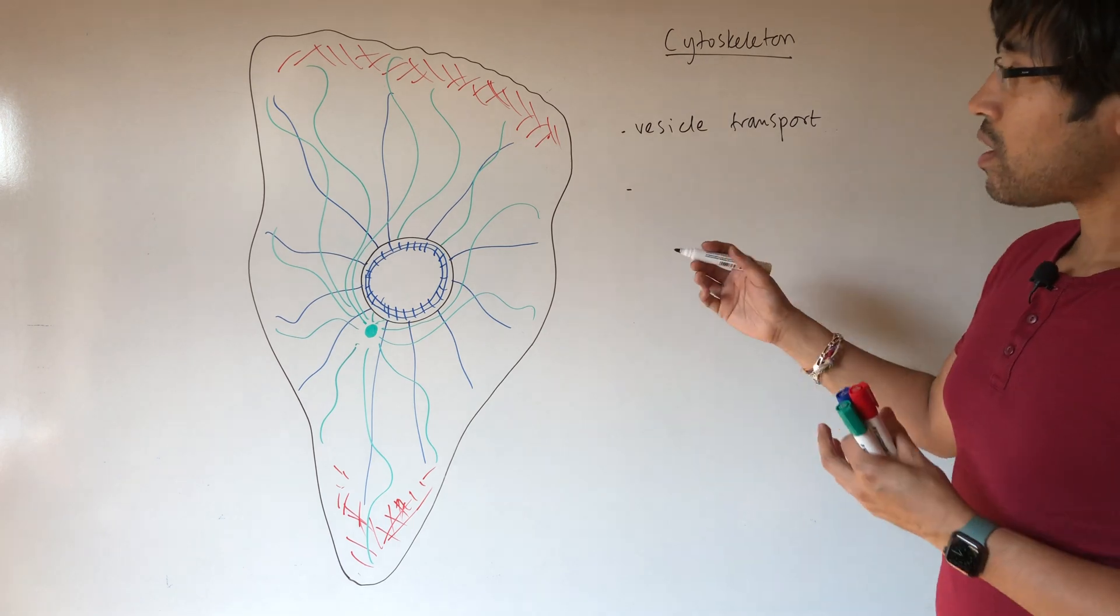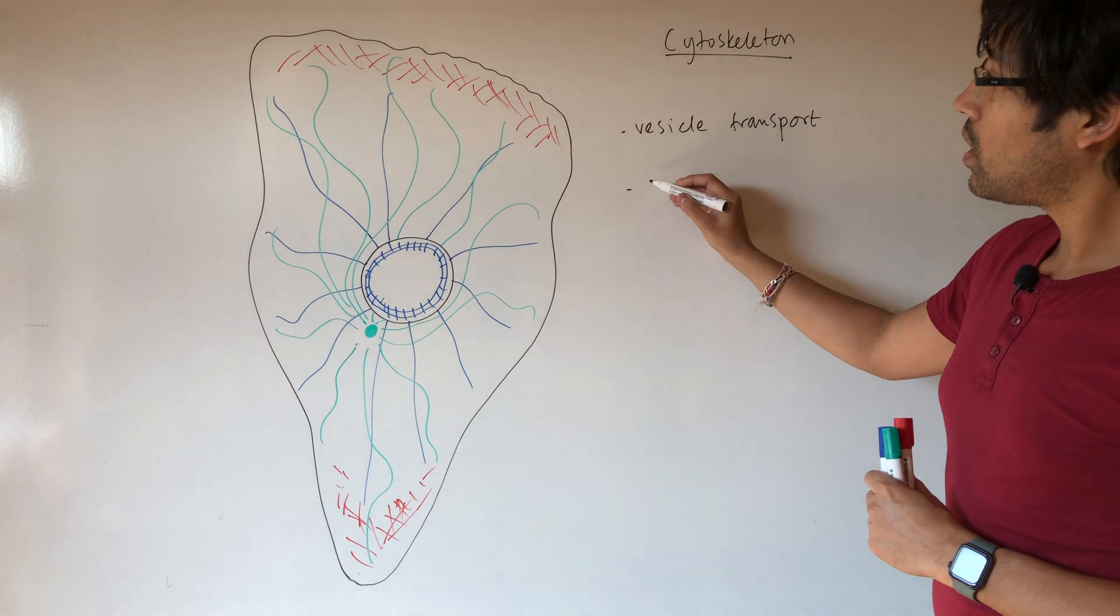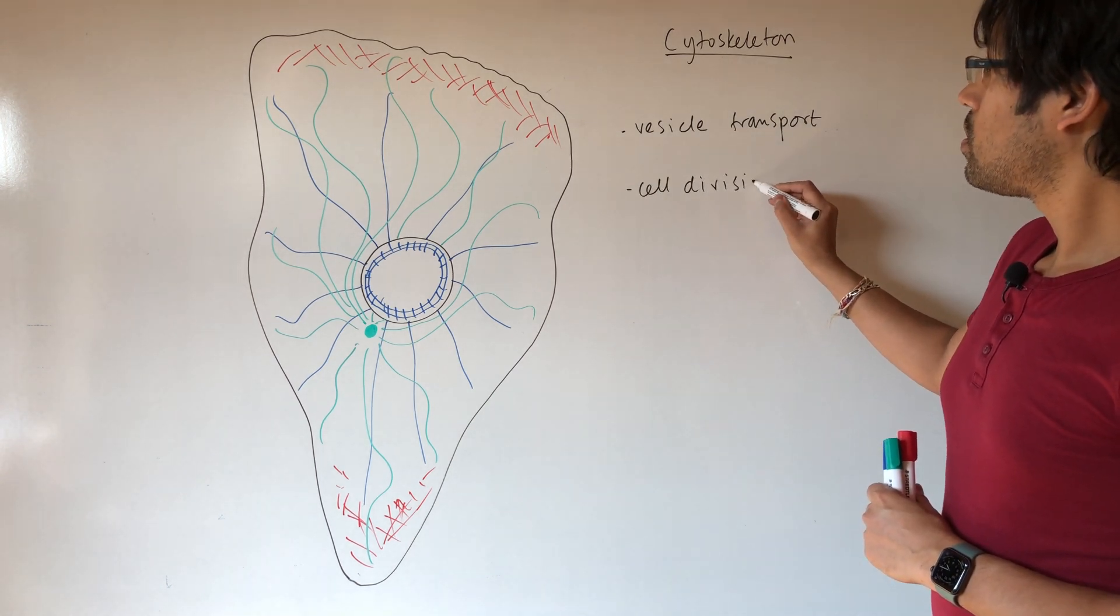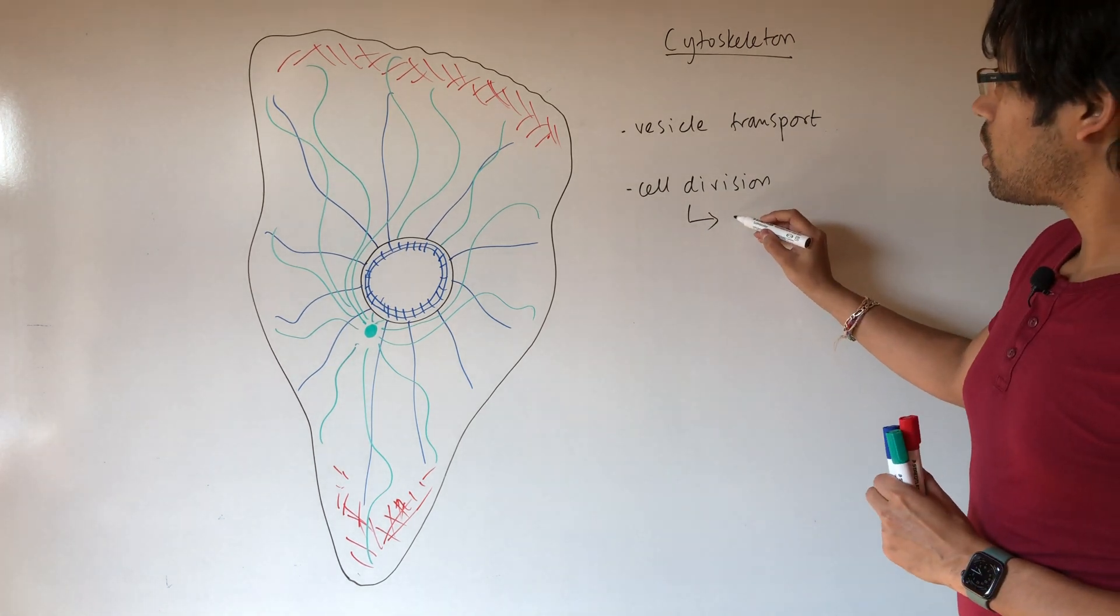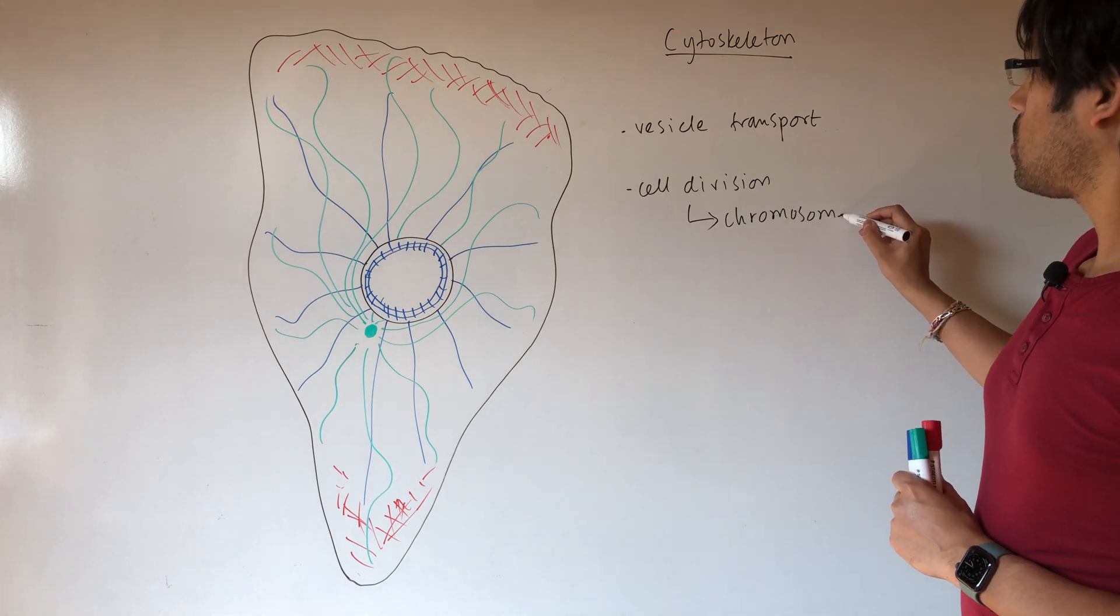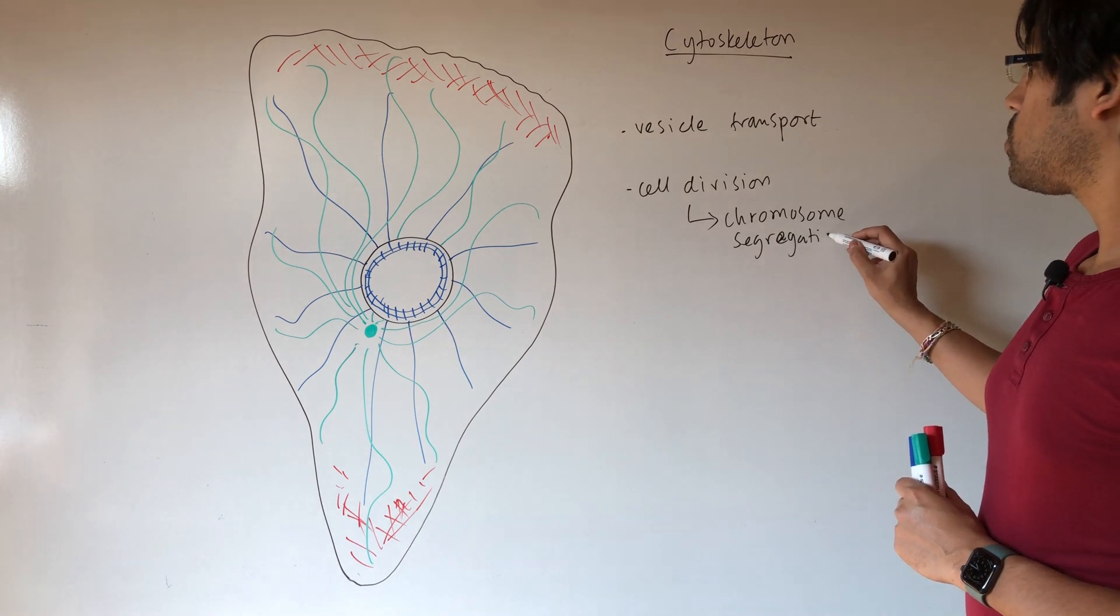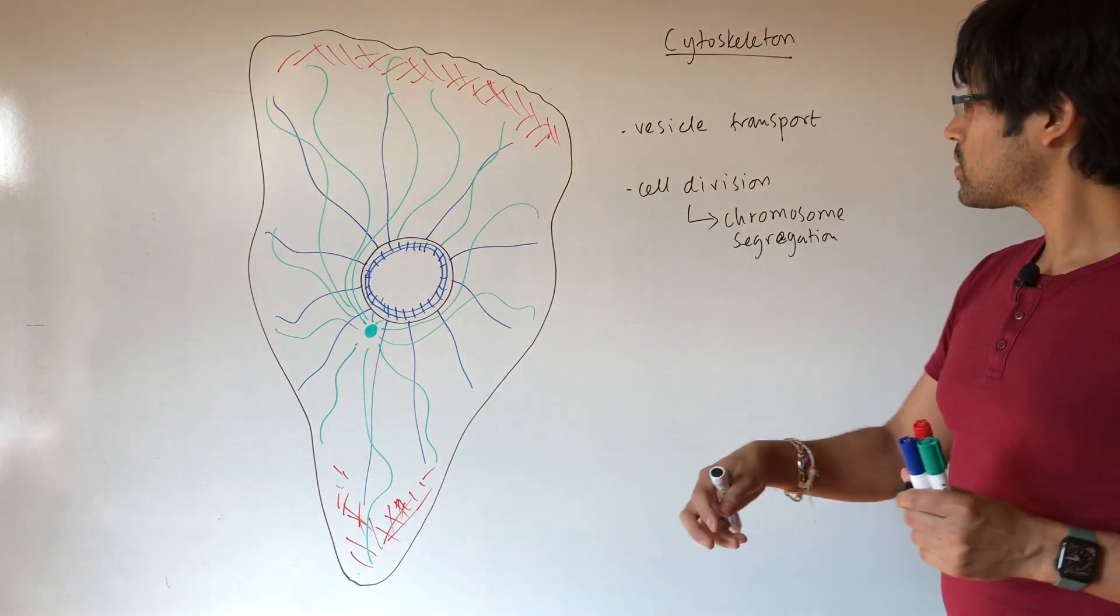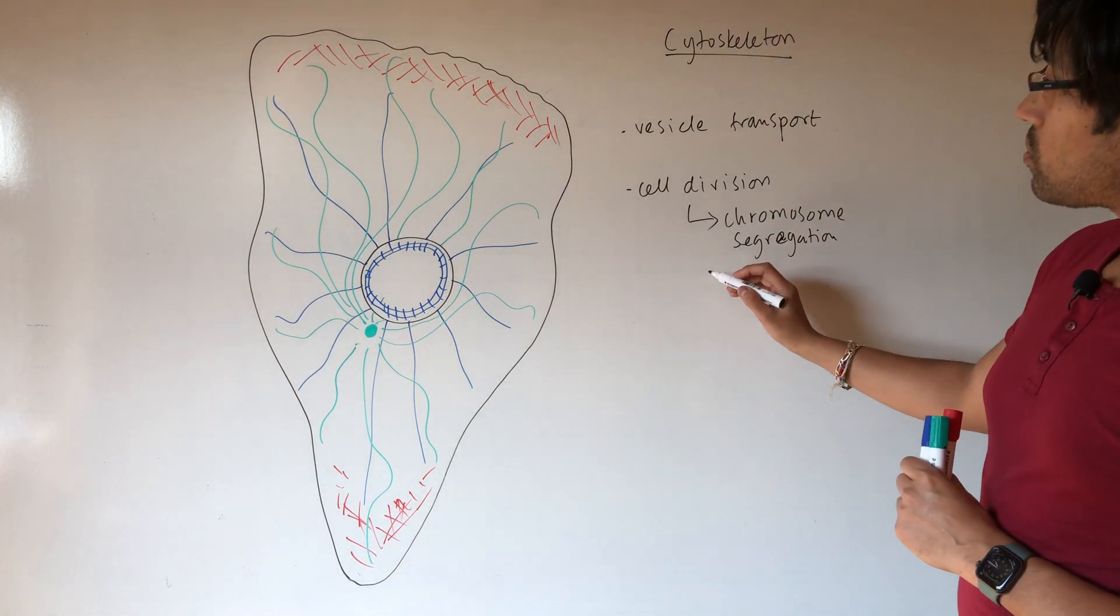We also have important involvement of the cytoskeleton in cell division. So during cell division, we have the process of chromosome segregation. So making sure that the chromosomes are pulled to the opposite poles of the cell. That is dependent on cytoskeletal involvement.